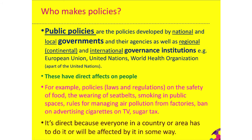These public policies have a direct effect on people. For example, policies and laws on the safety of food are important — ensuring good quality chicken free from salmonella. Wearing seat belts is another example, as are smoking in public spaces, rules for managing air pollution from factories, bans on advertising cigarettes on TV, and the sugar tax. These are all examples of policies that governments and governance institutions have advocated or created, and they are direct because everyone in a country or area is affected.